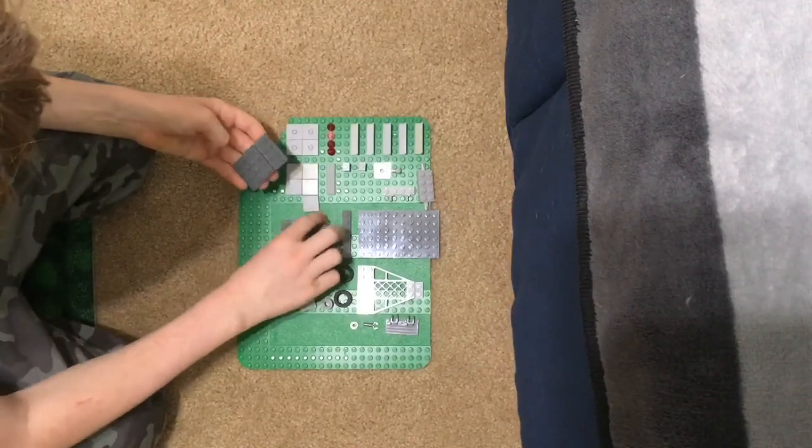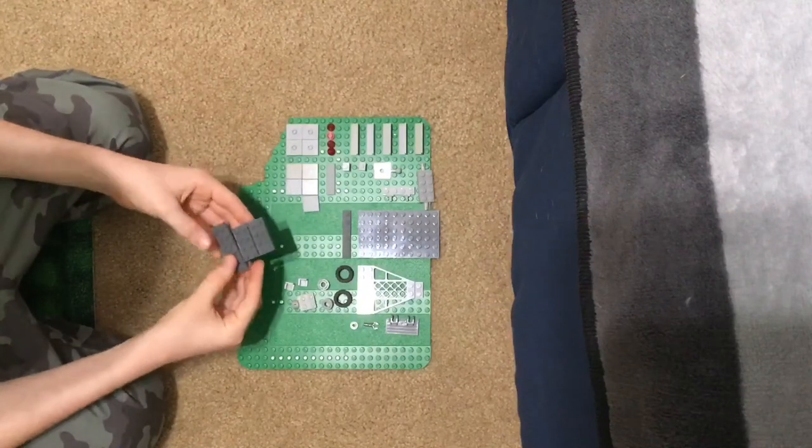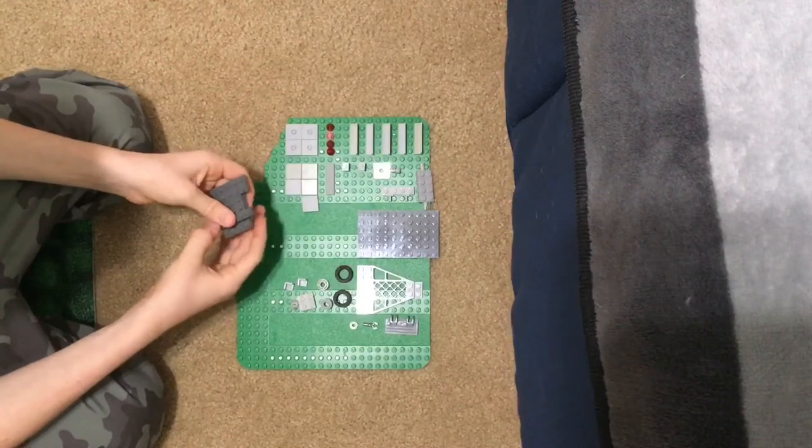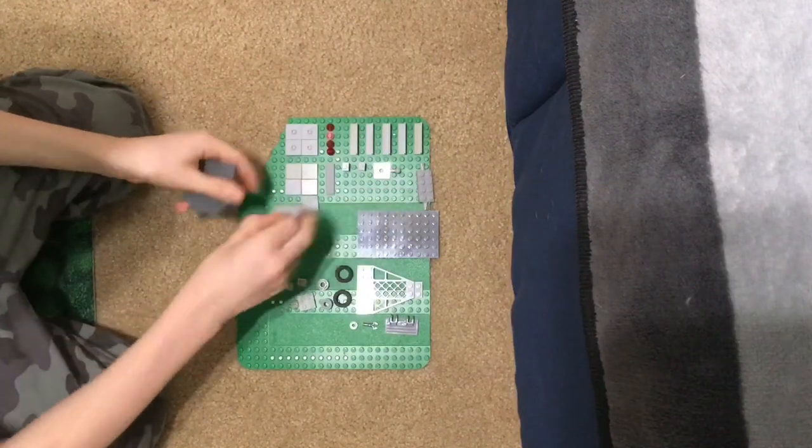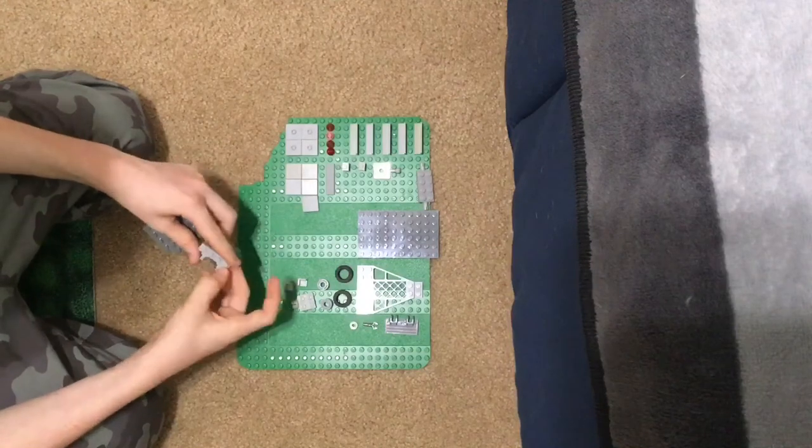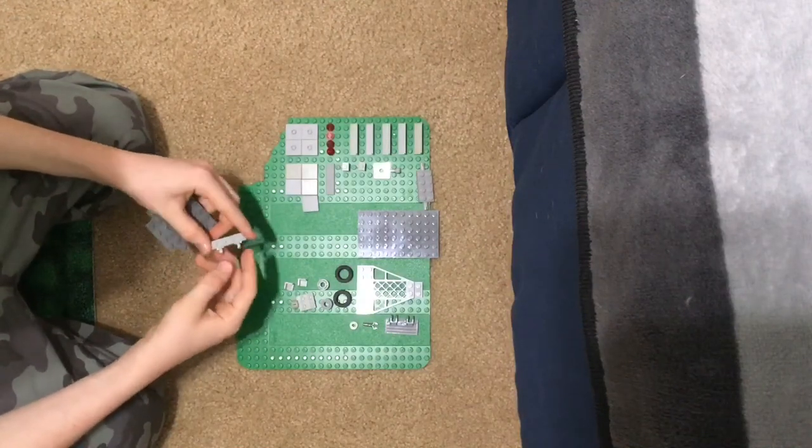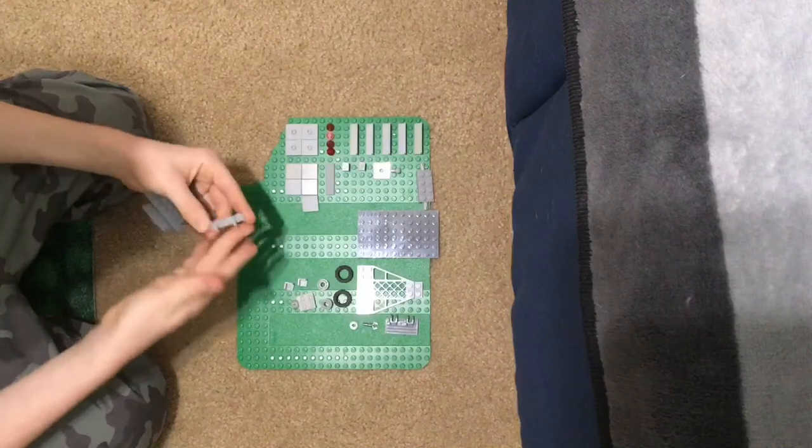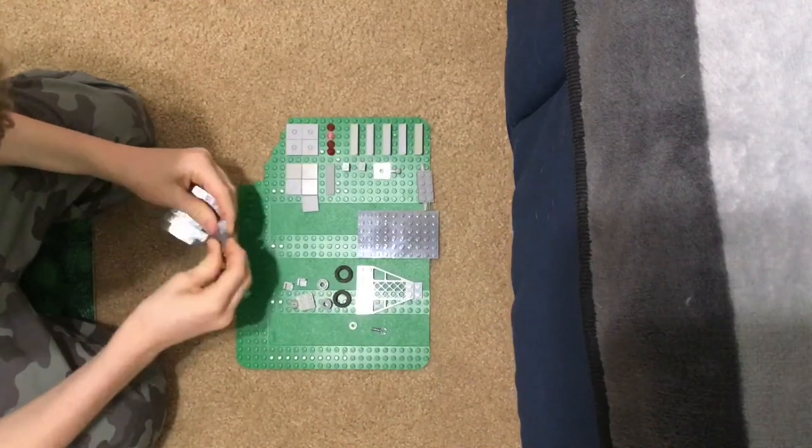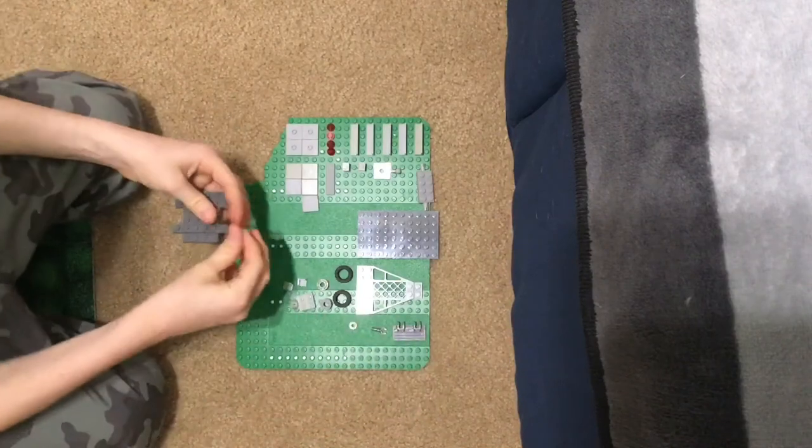And then you want a 2x6 dark gray plate, put it on one side, and then get a 1x6 dark gray plate and put it on this side. Get this piece, don't know what this is. So, modified light gray 1x4 plate with these pieces on it, so it hooks up to this. It makes that clicky noise. And you want to put it there.